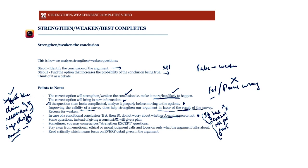Some questions, instead of giving a conclusion, will give a plan. We have a separate video discussing plan questions in detail. For now, understand that when a plan is given, strengthening means improving the possibility of the plan's success, and weakening means showing the plan is likely to fail. It is similar to our regular arguments with premises and conclusions.